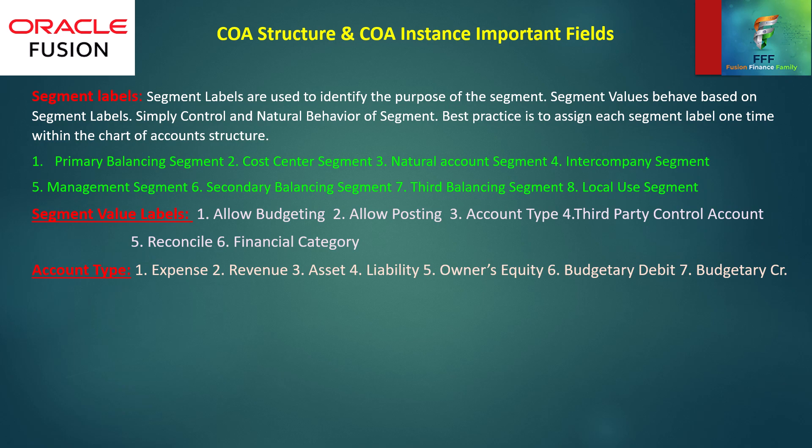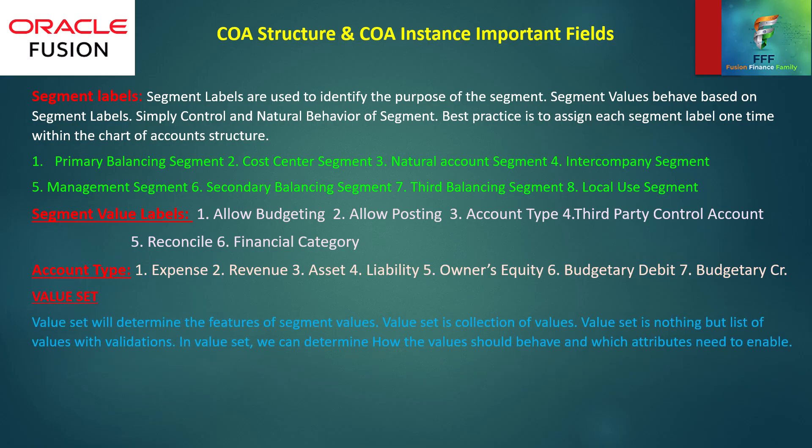third balancing segment, and local use segment. Segment value labels are: allow budgeting, allow posting, account type, third party control account, reconcile, and financial category. Account types are: expenses, revenue, asset, liability, owner's equity, budgetary debit, and budgetary credit.